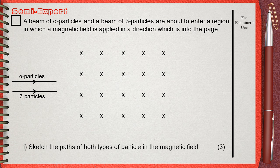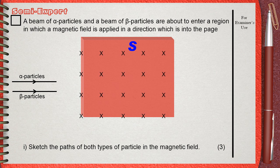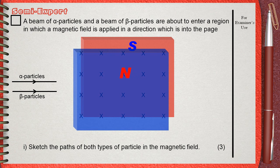These axes drawn in this region indicate a magnetic field which direction is into the page. In other words, as if there's a south pole into the page and a north pole out of the page. Since the magnetic field is from north to south, this means that our magnetic field is into the page. In this question, he is asking you to sketch the paths of both types of particles when they enter the magnetic field. This question is for three marks.